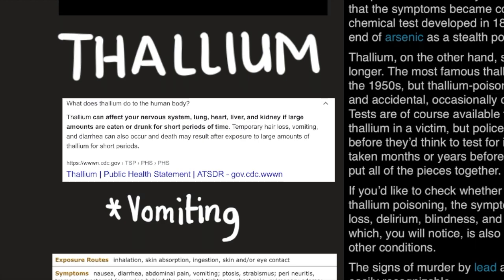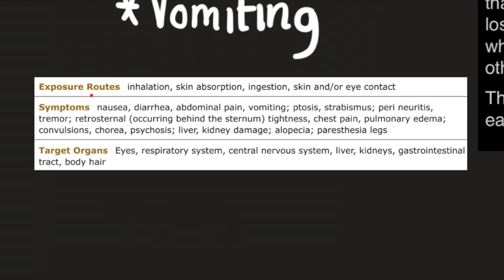and kidney if large amounts are eaten or drunk for short periods of time. Temporary hair loss, vomiting, and diarrhea can also occur, and death may result after exposure to large amounts of thallium for short periods. Here's some more information, the exposure routes for thallium is inhalation, skin absorption, ingestion, skin and/or eye contact.